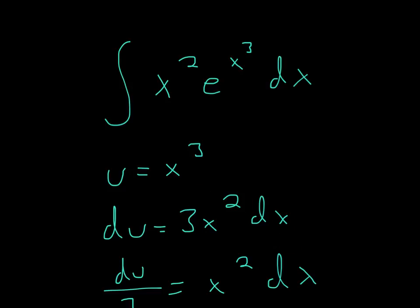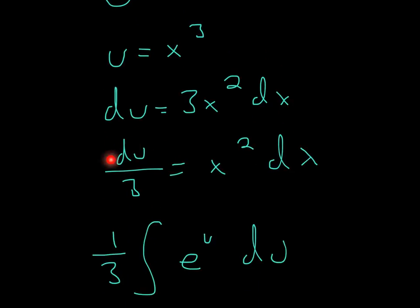So now you have this. Now you look and see if 3x squared is here—well, only x squared is here. So what we can do is divide each side by 3, and that'll get you du over 3 equals x squared dx.